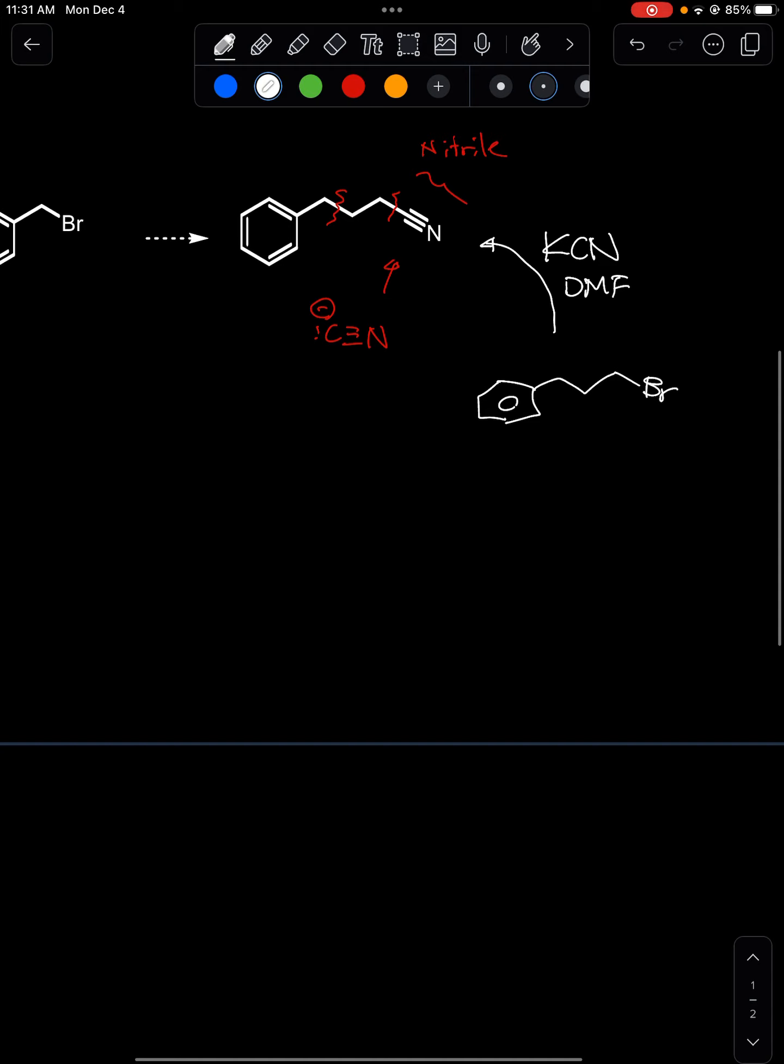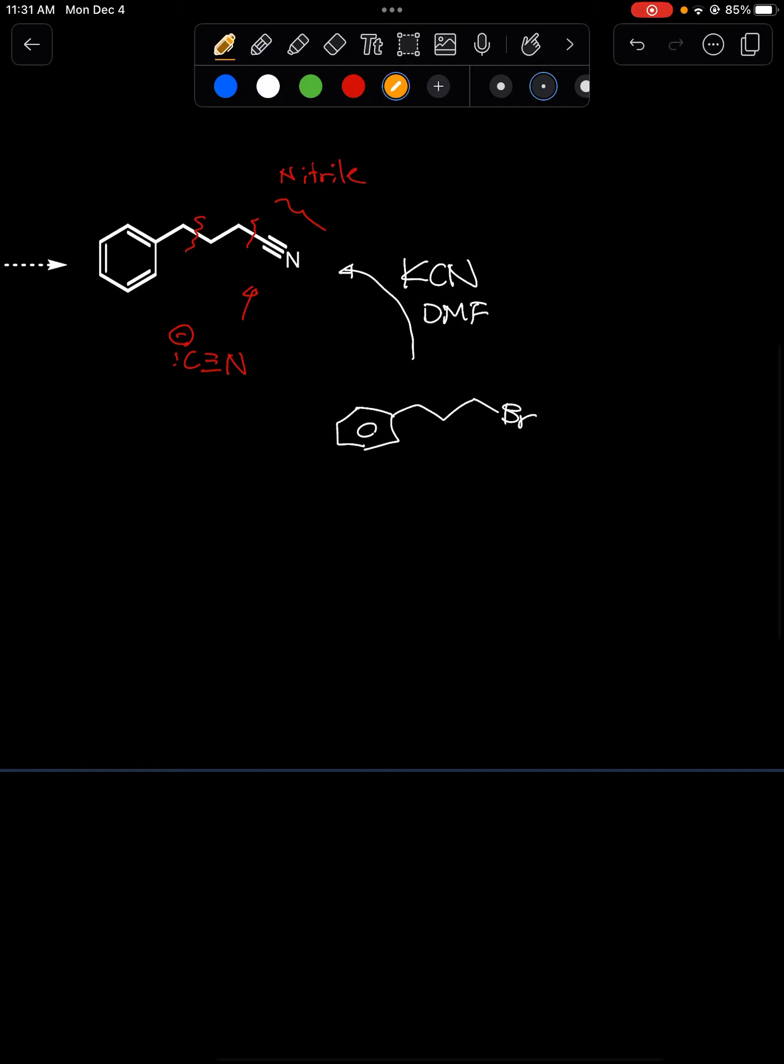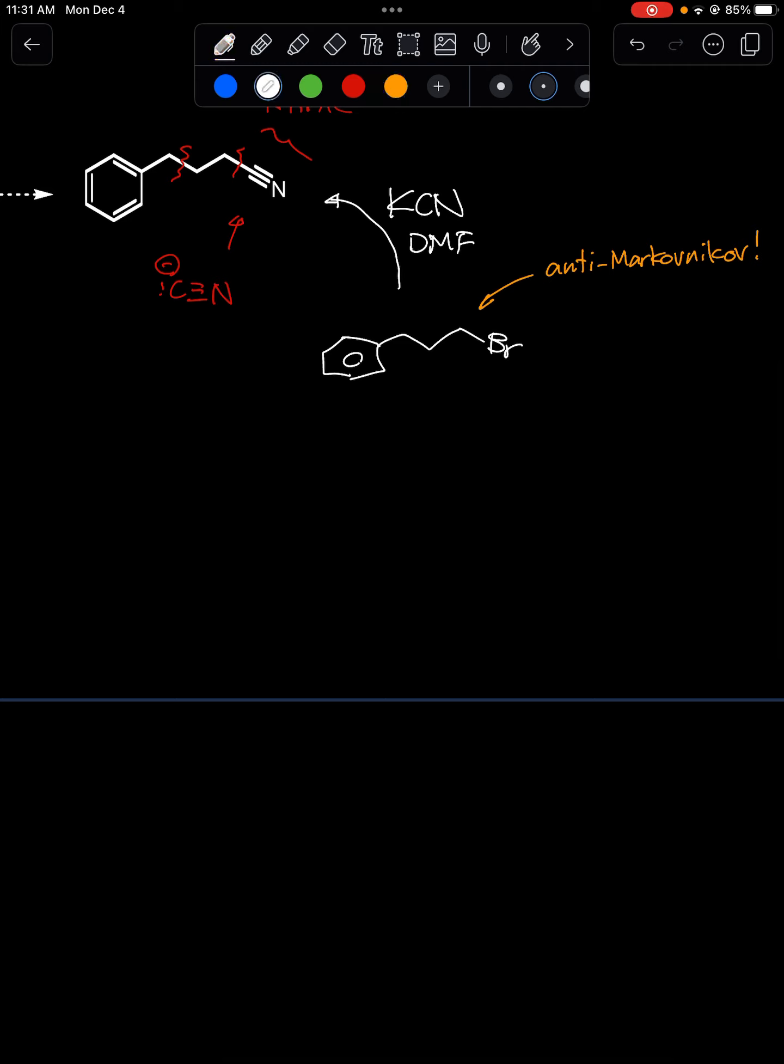Now how would you make this anti-Markovnikov bromide? Because bromide seems to be on a less substituted carbon. So that's something to notice about this product or functional group we're trying to make. Then we need to think about how you would introduce that to say a double bond.